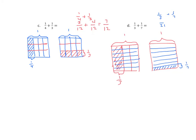We'll count our shaded portion: one through seven. So one-third becomes seven twenty-firsts. Now we'll partition our second rectangle using two vertical lines to partition it equally into three parts. Again, the denominator is twenty-one. Three out of twenty-one are shaded, so three is our numerator. We add seven plus three and get ten twenty-firsts. We cannot simplify either of these fractions because there are no common factors.